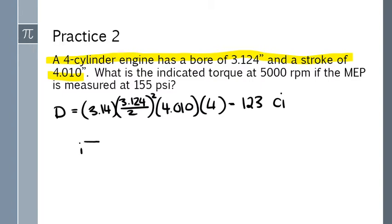Indicated torque. Ignore the 5000. I don't need it for this formula. If I was finding indicated horsepower I'd bring it in but I don't for indicated torque. Mean effective pressure multiplied by displacement in cubic inches divided by 150.8.